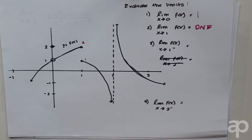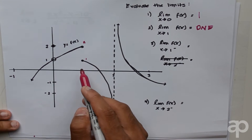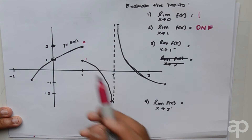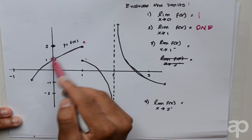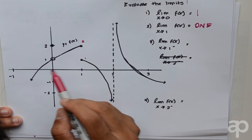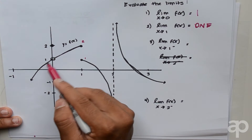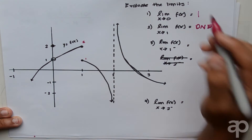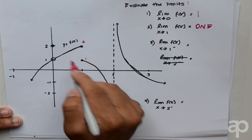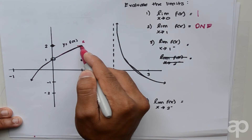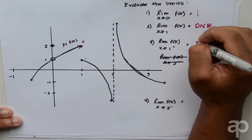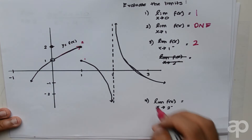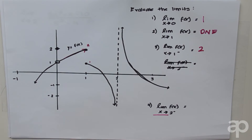The third problem asks us to evaluate the limit of f of x as x approaches 1 from the left. Given x-coordinate 1, if you approach from the left using this piece of the piecewise function, we notice that it yields 2. So the limit of f of x as x approaches 1 from the left equals 2.